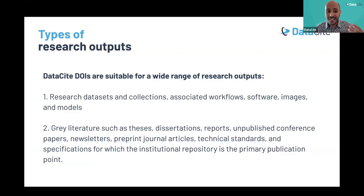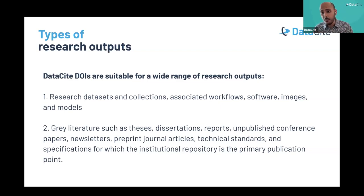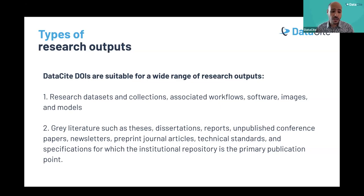DataCite DOIs can support a wide range of research outputs. The first type includes datasets and collections and all materials affiliated to the research process itself — datasets, collections, images, samples, and protocols. The second type is gray literature: theses, dissertations, unpublished conference presentations, reports, newsletters, preprints, versions of journal articles, and technical standards — essentially all items usually deposited into institutional repositories. DataCite can support all these output types with DOIs.